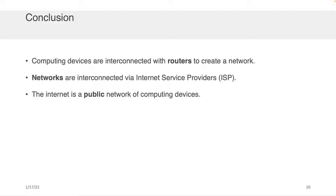The conclusion here is that computing devices are connected with routers to create networks, and that networks are interconnected via internet service providers. All the internet is is a public network of computing devices — all those devices hooked together through all those cables, all following similar rules of communication so that they can send and receive information to each other using that physical infrastructure.